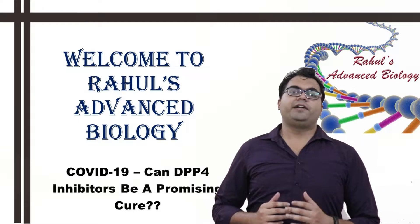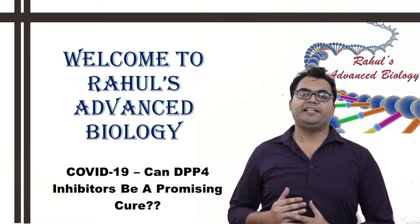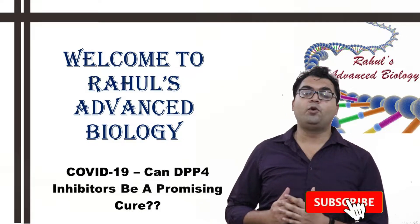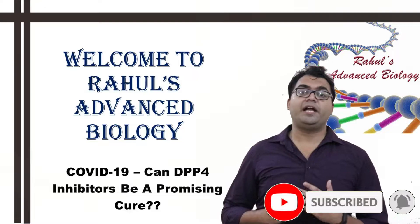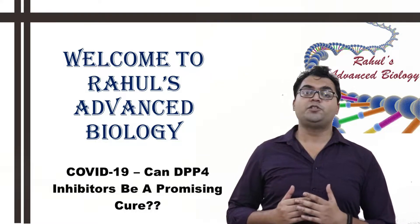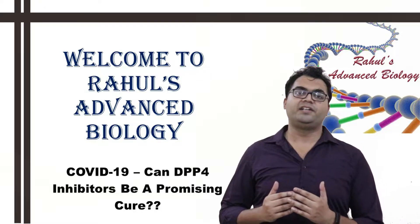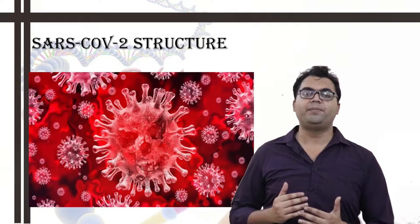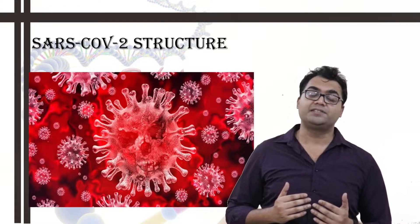Hello friends, welcome to yet another intriguing edition of Rahul's Advanced Biology. Today I will be talking about a very ecstatic topic on COVID-19: why DPP-4 inhibitors could be a good cross pattern. The COVID-19 disease, which is caused by the SARS-CoV-2 virus, has already been termed a global pandemic by the World Health Organization. More than 2 million people have already been affected by it and more than 2 lakh people have already lost their lives.